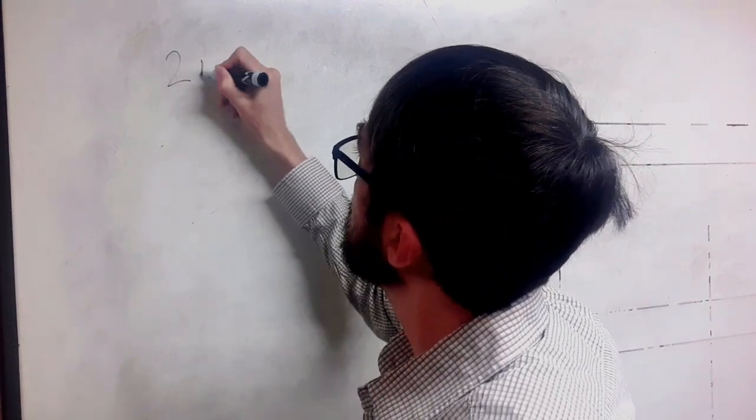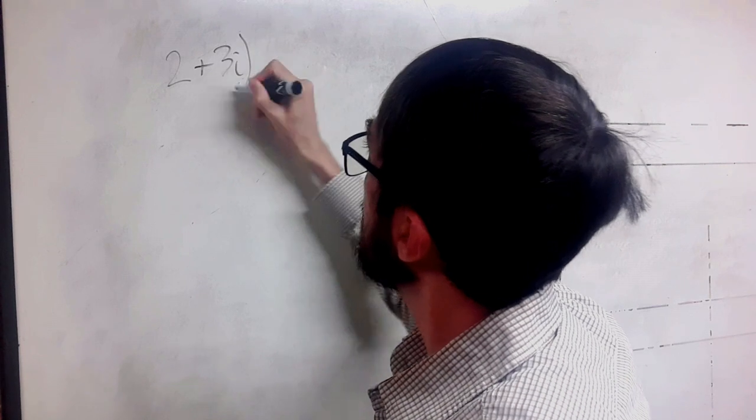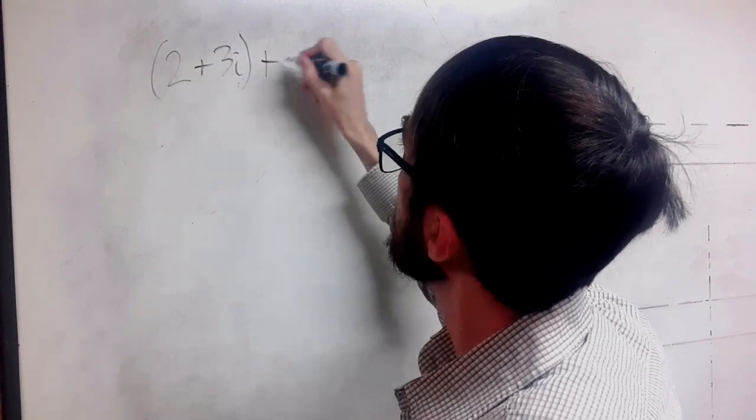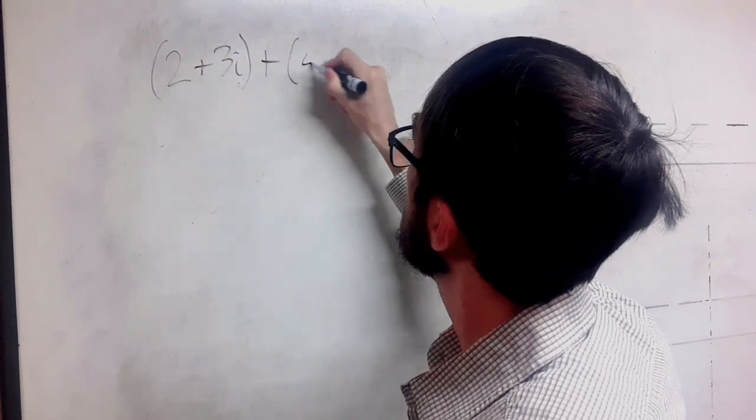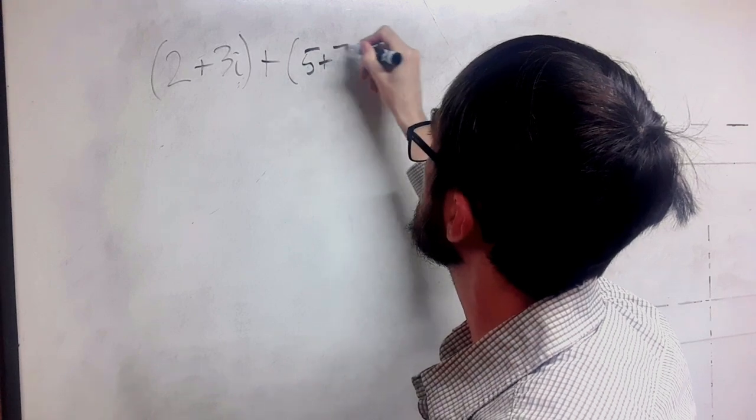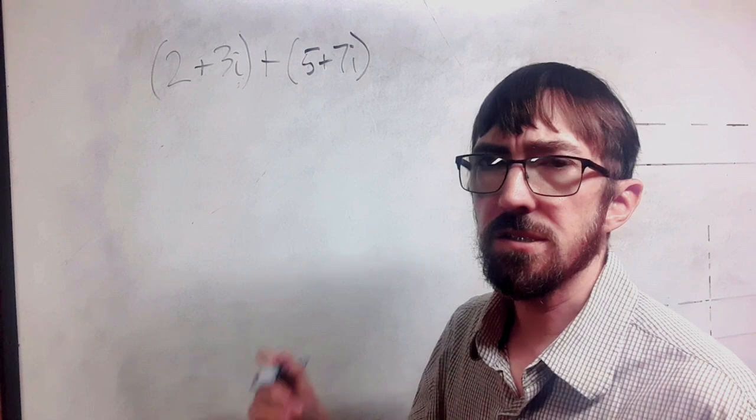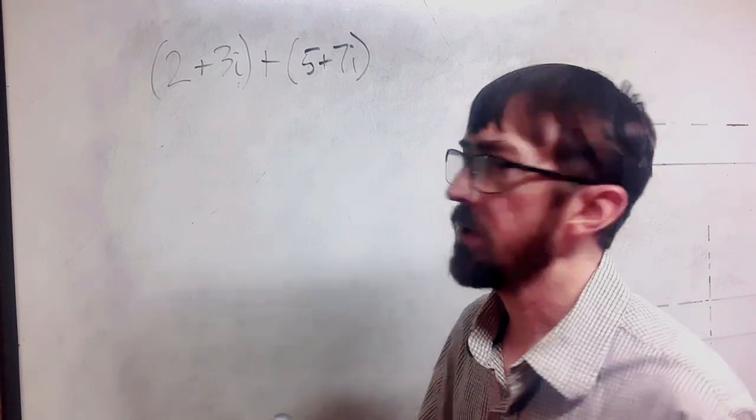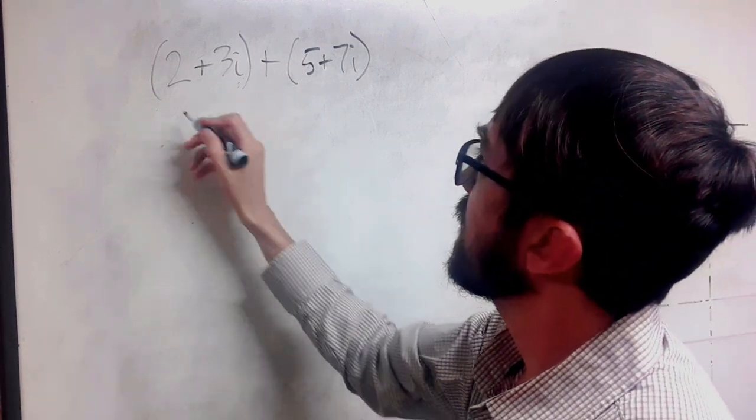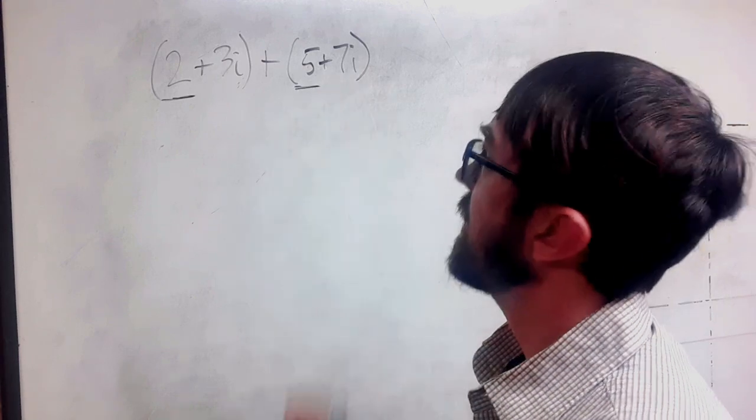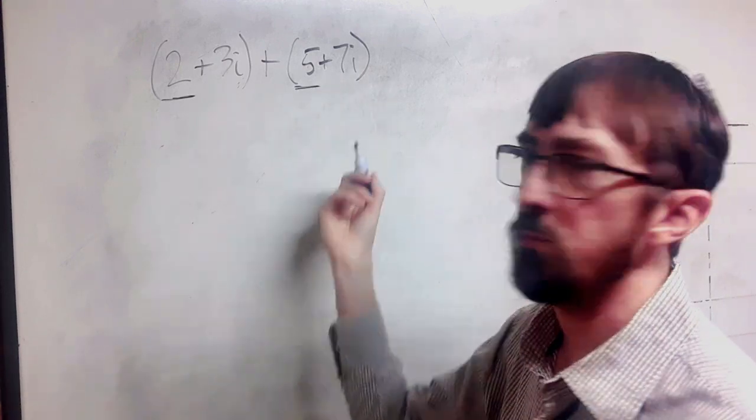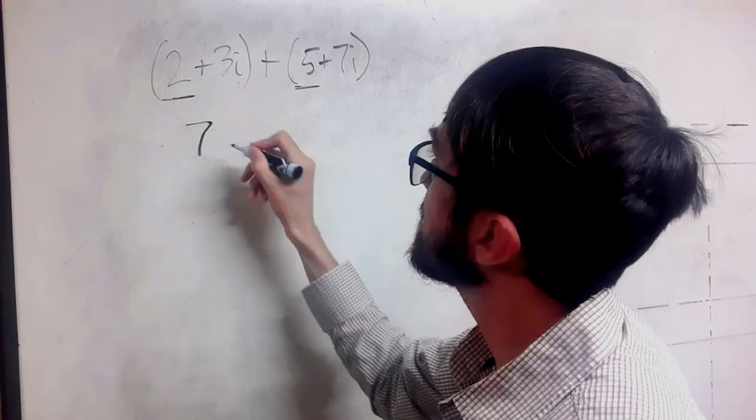So let's start with 2 plus 3i and then we're going to add 5 plus 7i. Addition is the easiest thing that you can do with complex numbers. We want to look at like terms. So the 2 and the 5 here, there's nothing attached to them.